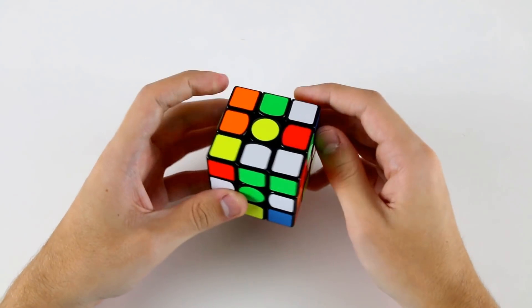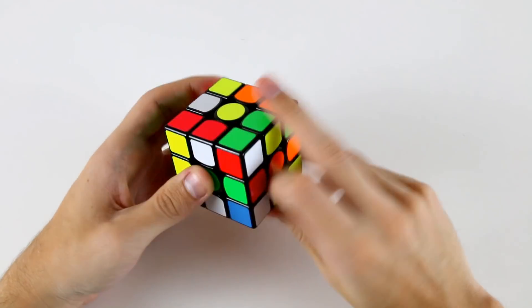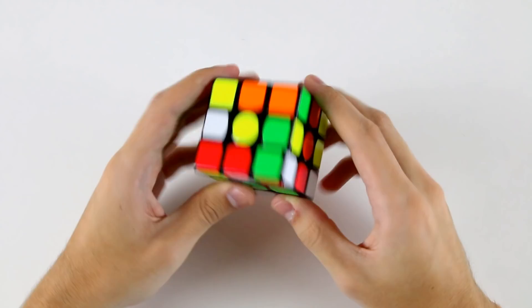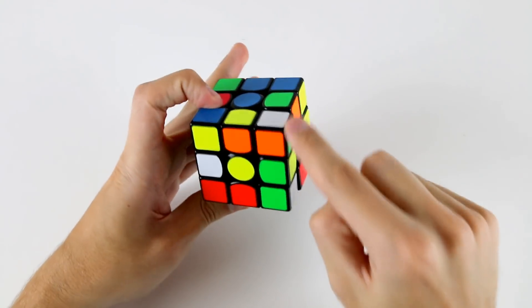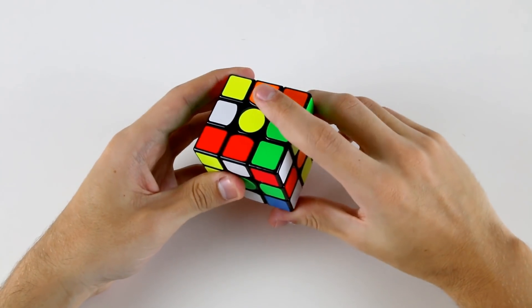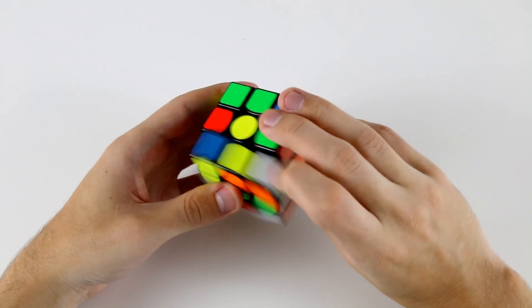So if I do something like f' u', actually before I do that, if I do f' u' r' l f2, then this edge will just end up here and this corner will end up down here. So u' r' l f2.